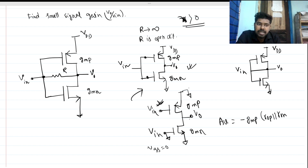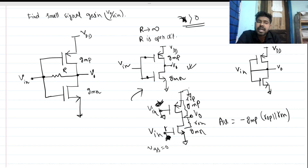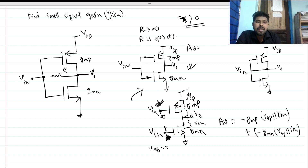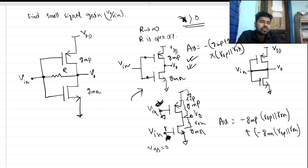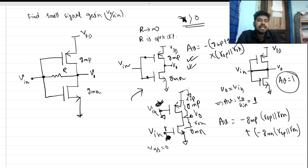If only the PMOS input is active, the gain is minus gmp times (rop || ron). Then if only the NMOS input is active, the gain is minus gmn times (rop || ron). The overall gain of this circuit is Av = minus (gmp + gmn) times (rop || ron). For R equals zero, Vout equals Vin, so the gain is simply plus one.